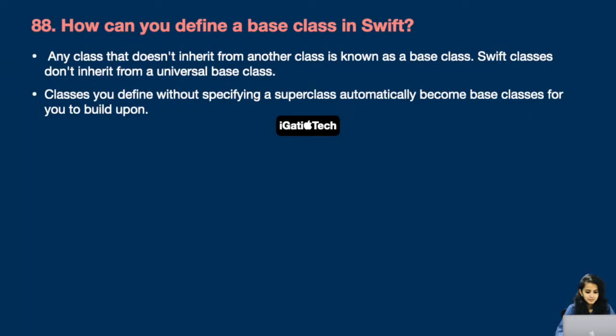Question number 88: How can you define a base class in Swift? Any class that doesn't inherit from another class is known as a base class. Swift classes don't inherit from a universal base class. Classes you define without specifying a superclass automatically become base classes for you to build upon.